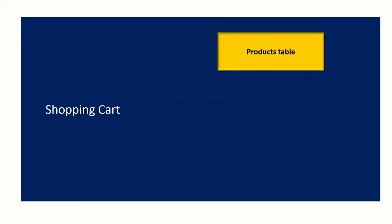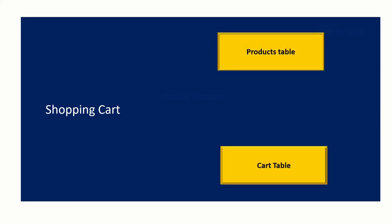In our shopping cart database we have two tables: the products table and the cart table. For every product we have an 'Add to Cart' button. Whenever I click on this button, the product will be inserted inside the cart table — not inside the products table, but inside the cart table.